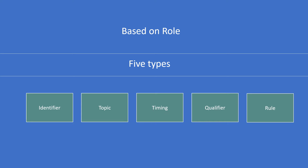SDTM variables are classified into five major roles. The first one in the list is identifier variables, and then comes topic variables, followed by timing variables, and then qualifier variables, and lastly the rule variables.